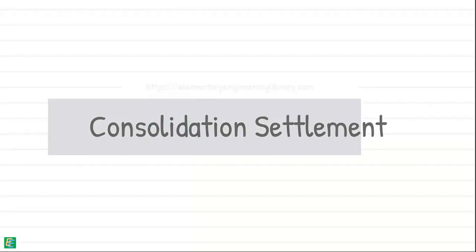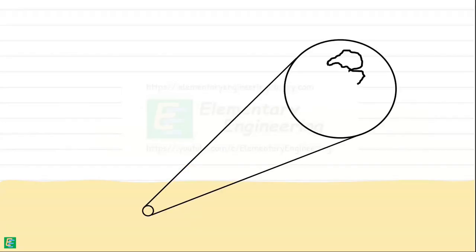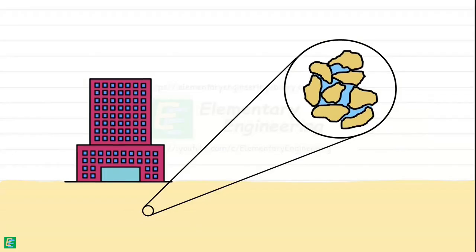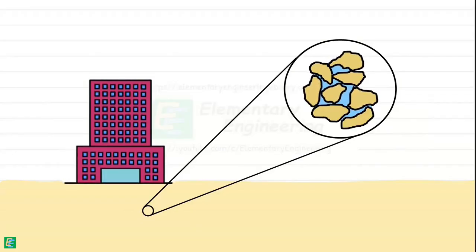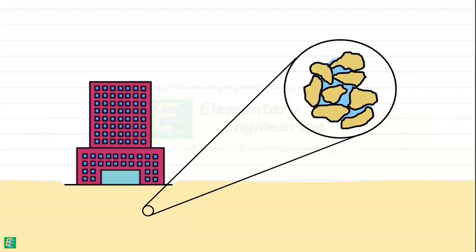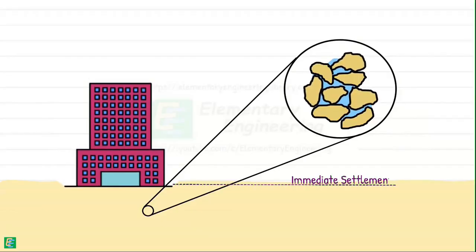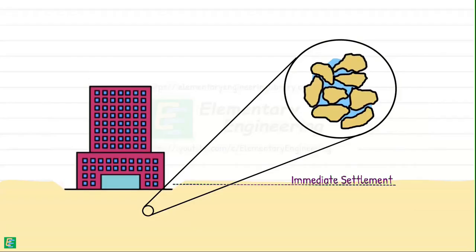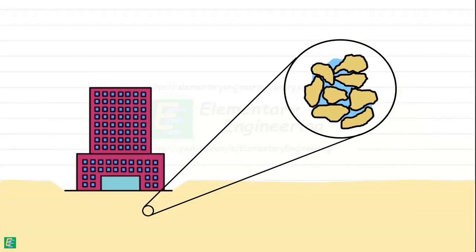Then there is another component of settlement: consolidation settlement. When soil, particularly if it is saturated, is subjected to a load, some reduction in its volume occurs immediately due to air expulsion and particle rearrangement, which is immediate settlement. However, this volume reduction can continue even after immediate settlement is complete.